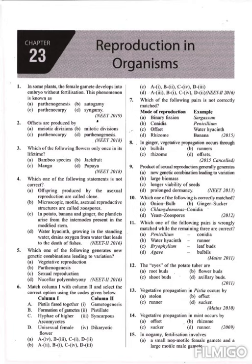Next question: match column 1 with column 2. Column 1 gives: pistils fused together, formation of gametes, hyphae of basidiomycetes, and unisexual female flowers. Column 2 gives: gametogenesis, pistillate, syncarpous, and dikaryotic. Formation of gametes is known as gametogenesis — no doubt about that. Based on this, option D is the correct one.